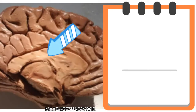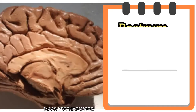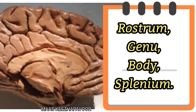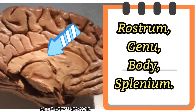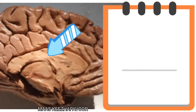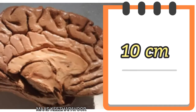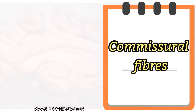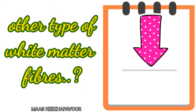The parts of corpus callosum are rostrum, genu, body, and splenium. The length is 10 cm. The commissural fibers pass through it. Find out the other type of white matter fibers and give your answer in the comment box.